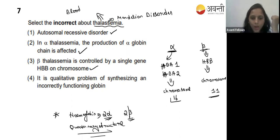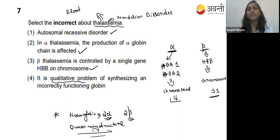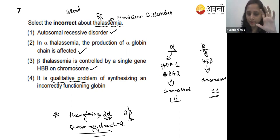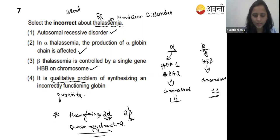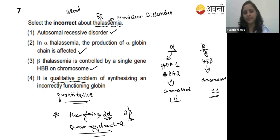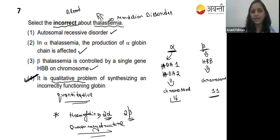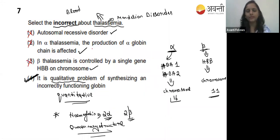Option four - it is a qualitative problem of synthesizing incorrectly functioning globin. No - thalassemia is not qualitative; qualitative disorder is sickle cell anemia. Thalassemia is a quantitative disorder where the quantity of alpha or beta chain is not produced correctly. So option four is the incorrect statement and is the correct answer.